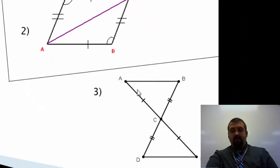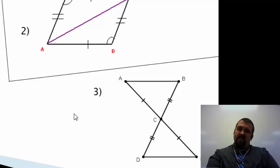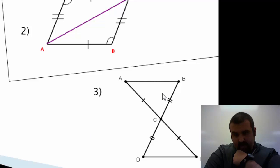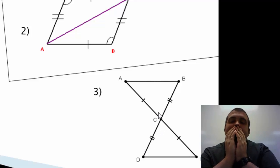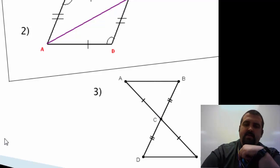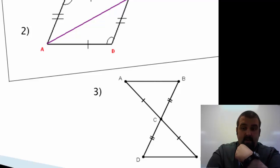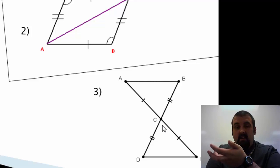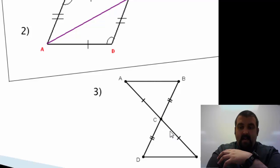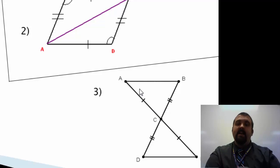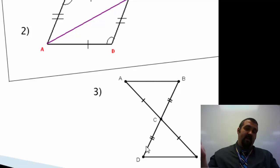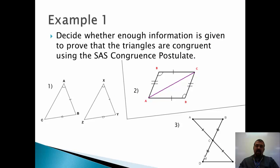Number three: I notice I have a side and a side matchup, but I need either the third side matching up or I need to show that the included angle — Angle ACB and Angle ECD — are congruent. Wait — aren't they across a vertex where two straight lines meet? In other words, aren't Angle ACB and Angle ECD vertical angles, and therefore congruent? Yes. So by Side, Angle, Side, I have triangle ACB congruent to triangle ECD. Numbers two and three I can prove as congruent by SAS; number one is no.